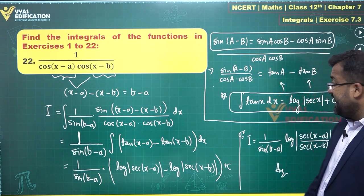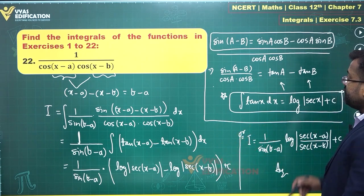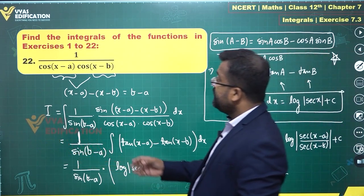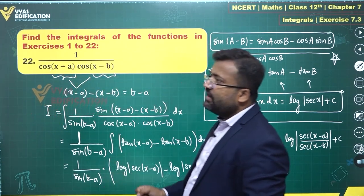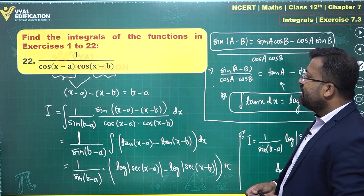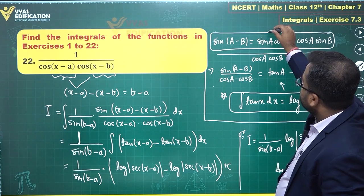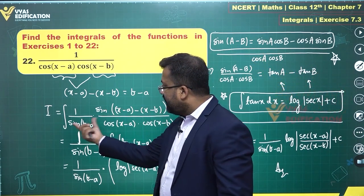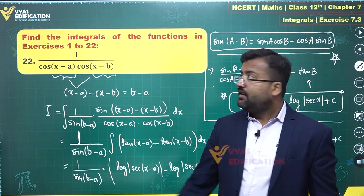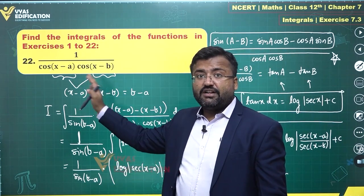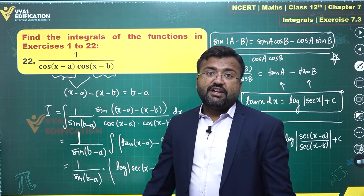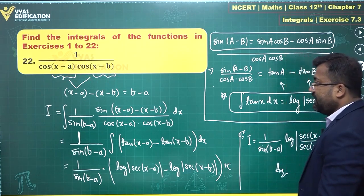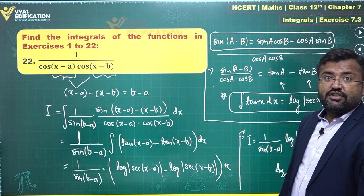You can leave the answer in either log-difference form or the combined log form — both are valid final answers. Now, if you had sin(x - a) and cos(x - b) instead, you'd use the cos(a - b) = cos(a)cos(b) - sin(a)sin(b) identity, and multiply and divide by cos(b - a). In general: if the numerator has cos·cos or sin·sin, multiply/divide by sine; if it's sine·cos, multiply/divide by cosine. With this approach, you can solve any such integration problem.